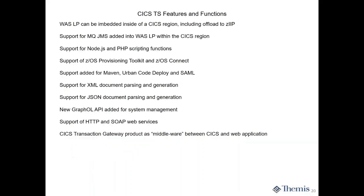So let me jump in and get through this. These are all the subsystems. WAS Liberty Profile can be embedded in the CICS region, including offload — most of the stuff is offloaded to the ZIIP. All that Java code is running on a ZIIP. I don't want to say free — you pay for the ZIIP — but the time spent on the ZIIPs does not count towards the four-hour rolling average. So if you're pricing your software on a mainframe based upon MSU — your million service units — time spent on the ZIIPs is not counting towards that cost.